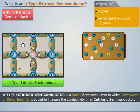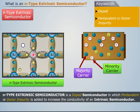It is important to note that a large number of electrons increase the rate of combination of electrons with the holes. Thus, in N-type extrinsic semiconductor, electrons are the majority carriers and holes are the minority carriers.